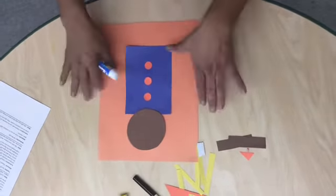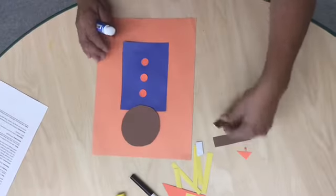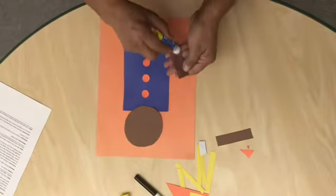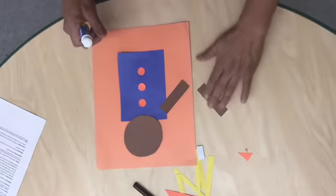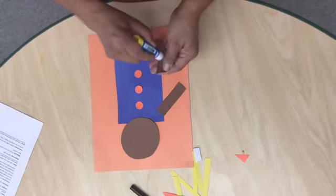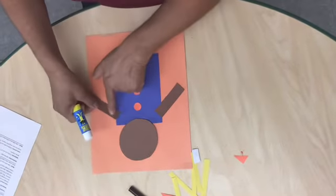Then I think we're missing some arms, so we'll create some arms for the scarecrow and they're gonna be rectangle shape. There's one and two arms.